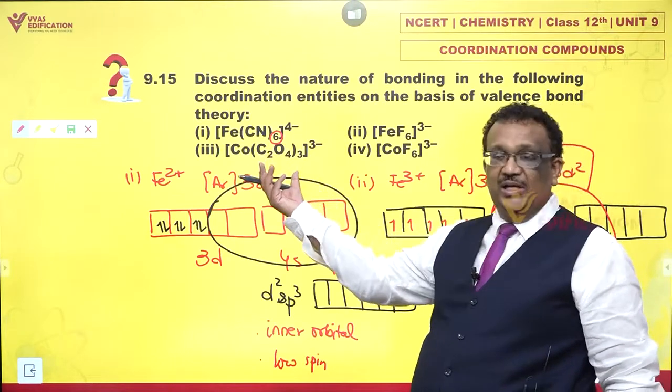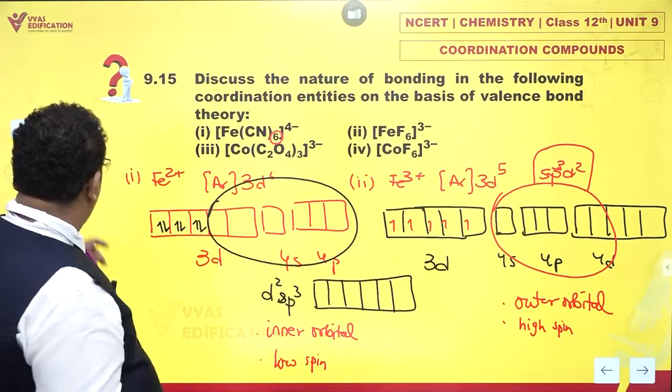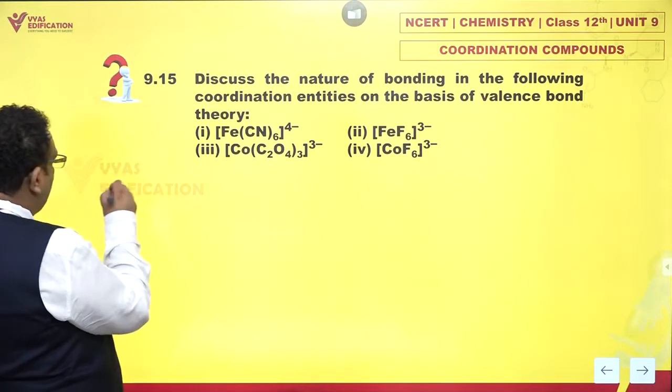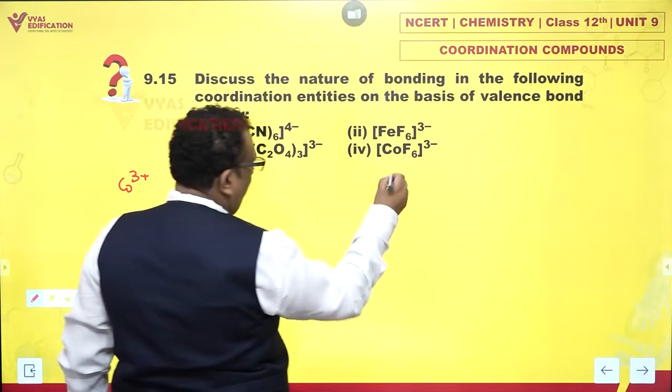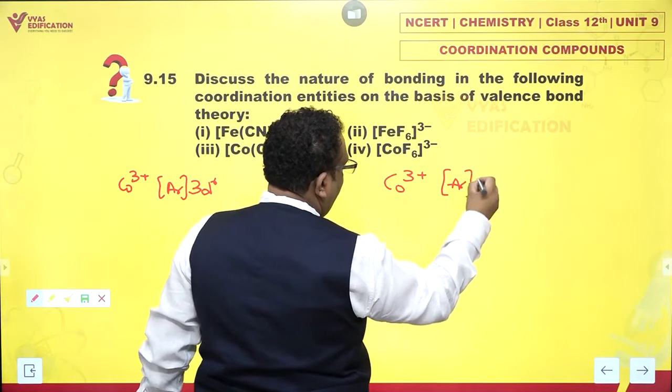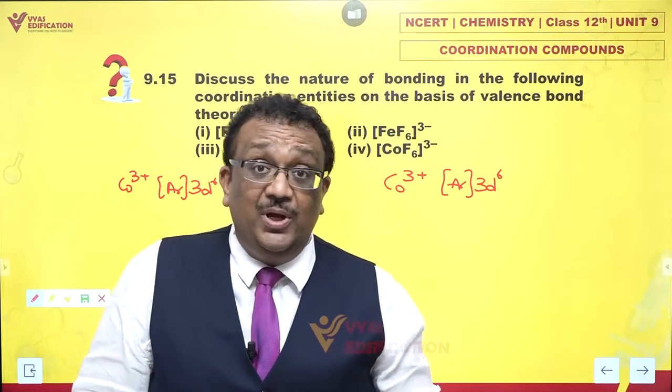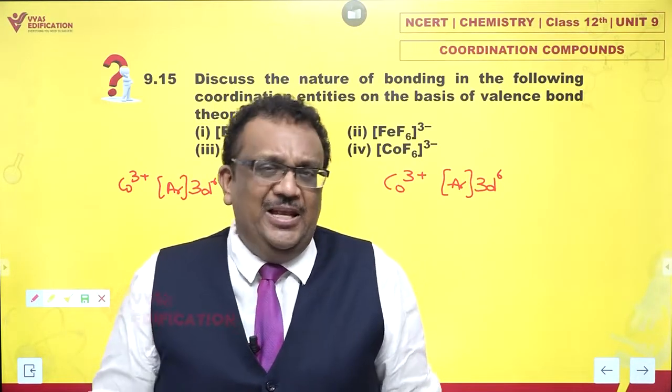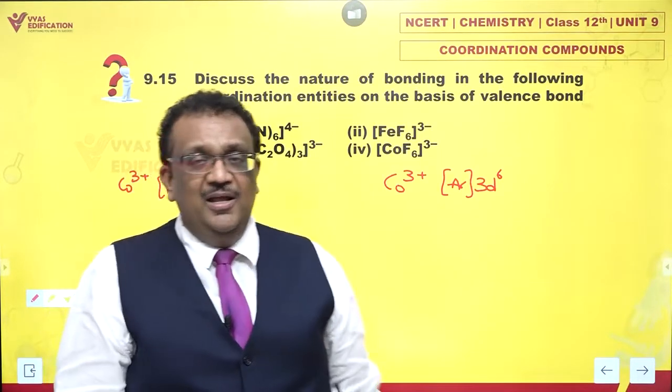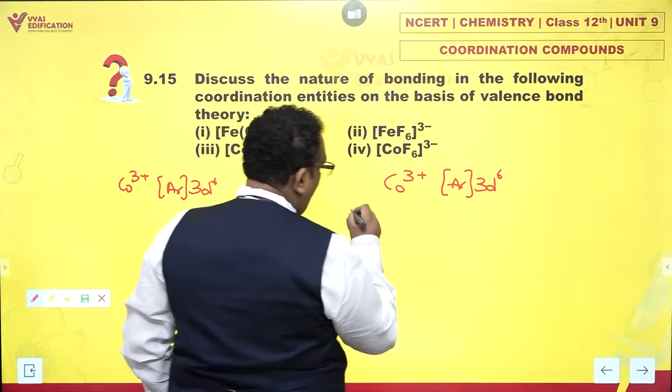You have tris oxalato-cobaltate-3 and hexafluorido-cobaltate-3-ion. These are also very beautiful ones. In both 3 and 4, I have actually cobalt plus 3 cation. And cobalt-3 is argon 3D6. Are you aware that as you move across the periodic table from left to right, the tendency to become low spin increases? So cobalt-3 is very keen to become low spin.